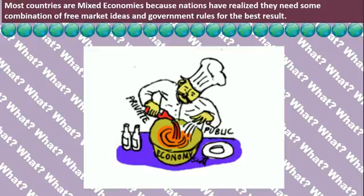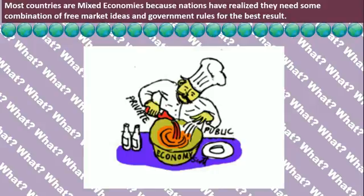Countries closer to the market side of the continuum graph will have a mostly free economy, with just some government intervention in certain areas of the economy. For example, a country may allow most businesses to do what they want, but utilities like water, electric, and sewage are run by the government to make sure every person gets clean and safe access to water and power. On the other hand, some countries are closer to the command side and have a mostly controlled economy with just some business freedoms. This usually means that people in the country are still under government control, but some businesses are allowed to participate in international trade under supervision by government officials. How much economic freedom and how much government control is a balance each government must choose.